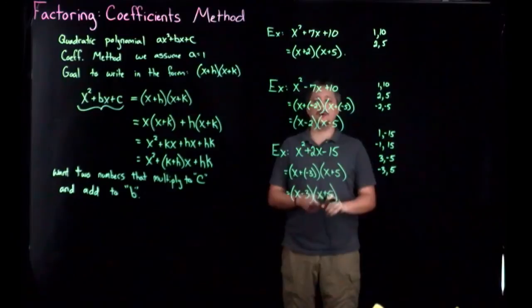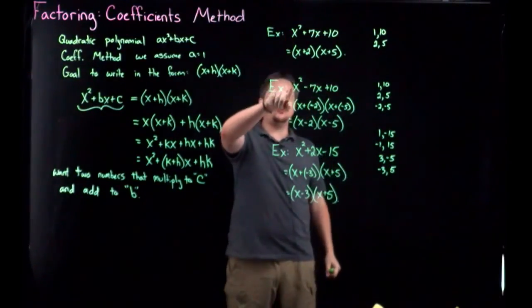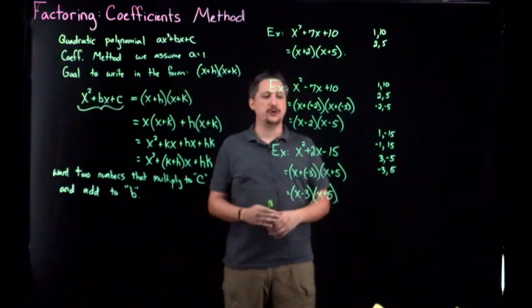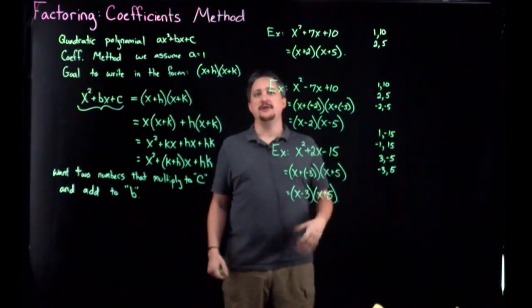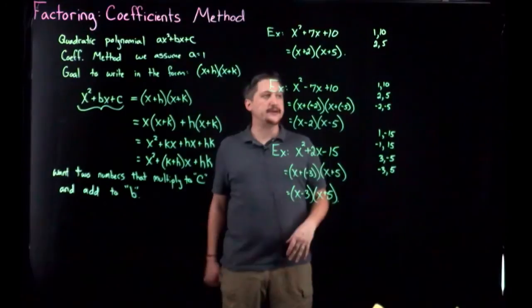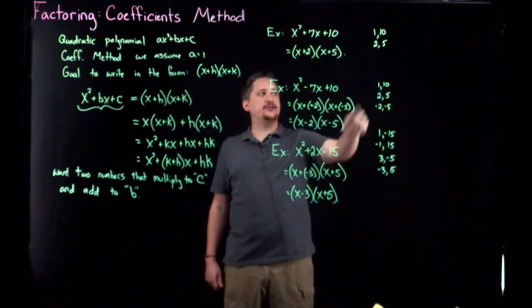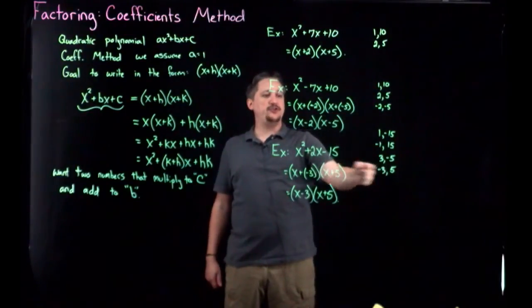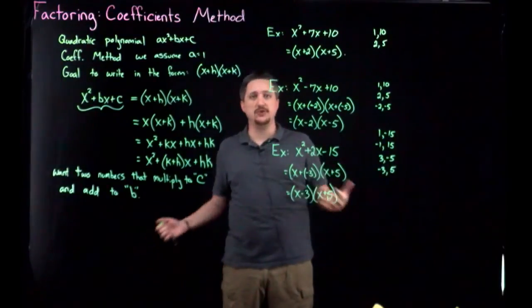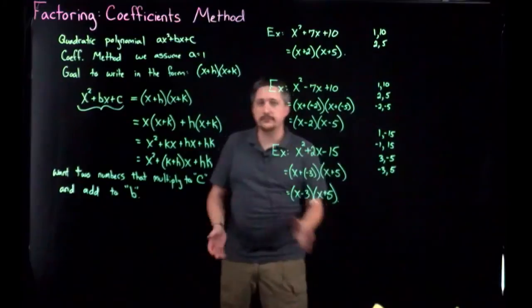And that's all there is to it. So for the coefficient method, the important thing is that the coefficient for the leading coefficient, the coefficient for the square term, the leading term, is 1. If it's not 1, we have to use a different method. That's the AC method, we'll talk about that later. And then if it is 1, then you can factor the constant term and then try to find two that add up to the middle term. And if you can, then you can factor it using this method. If you can't, then you have to do something else. All right. That is that.